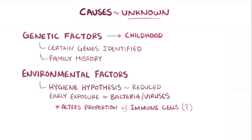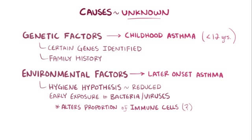In general, causes of childhood asthma diagnosed before age 12 are thought to be due to a stronger genetic influence, whereas later onset asthma is more likely to be due to environmental factors.